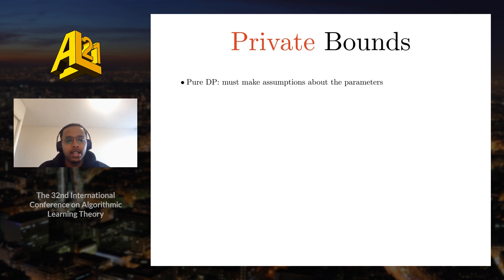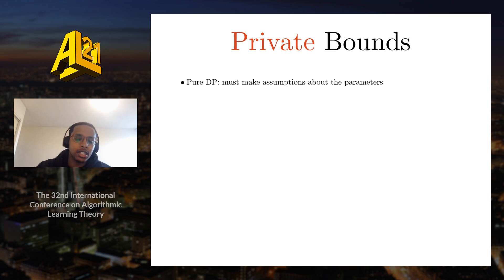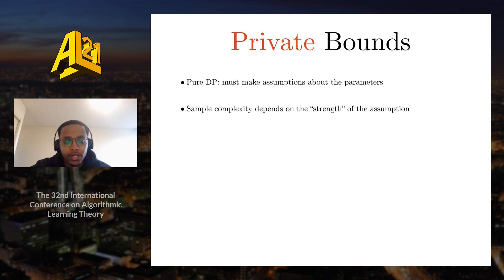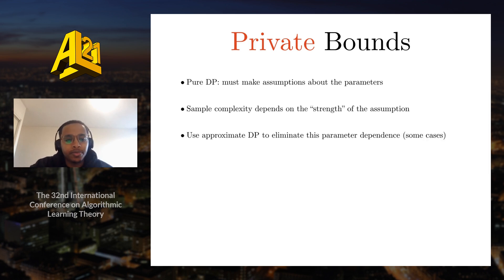In the pure differential privacy setting, we actually need to make assumptions about the parameters of the distribution. For a d-dimensional Gaussian, we need to assume that the mean vector lies in some known L2 ball in R^d, and that the condition number of the covariance matrix lies in some known range. The sample complexity depends on the strength of these assumptions — the weaker the assumption, the worse the sample complexity. In certain cases, approximate differential privacy can be used to eliminate this parameter dependence.